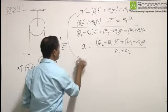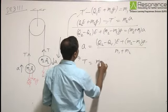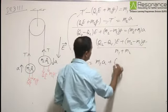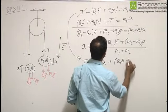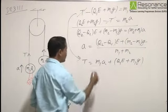For the second part, using this particular equation, we can write T to be equal to M1A plus Q1E plus M1g. If I put the value of A in the equation,